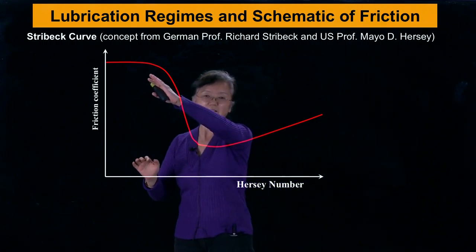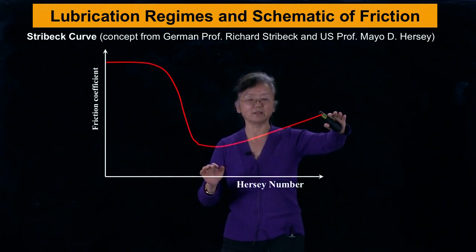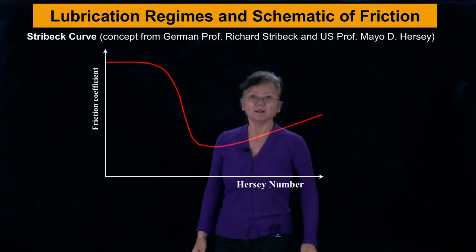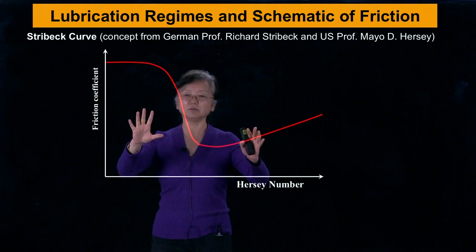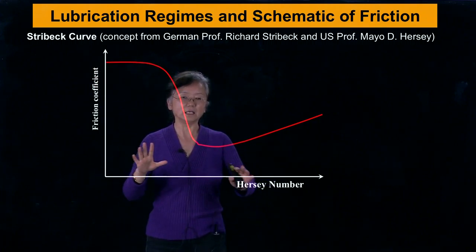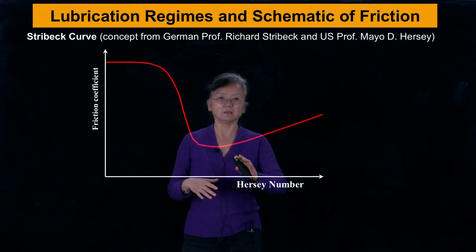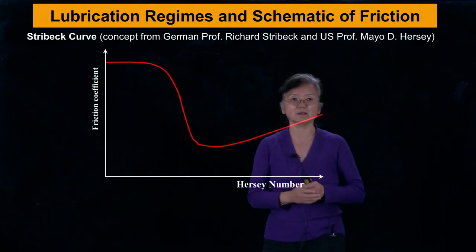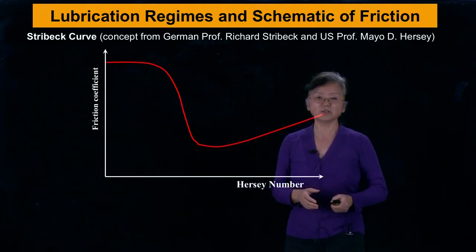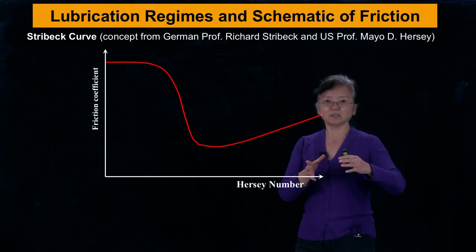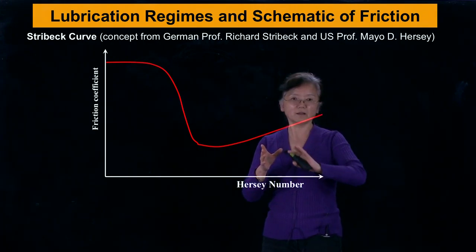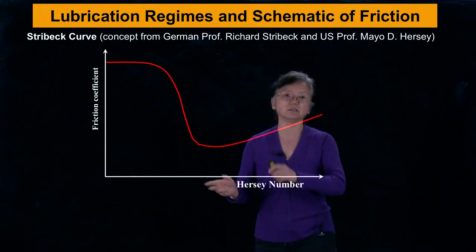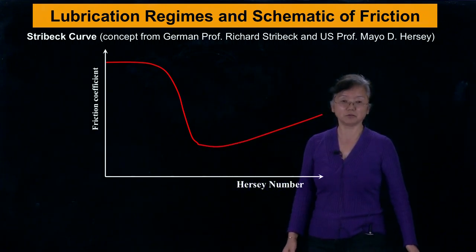I'll come to the Hersey number. This schematic of the friction variation shows that at the beginning it is almost flat, then there is a reduction, and then a little increase. The concept was due to Professor Stribeck, who did a lot of journal bearing experiments across a wide range of operating conditions such as load and speed. Later on, Professor Hersey in the U.S. found that we can plot this friction curve against the Hersey number, so the whole thing became conceptual and non-dimensional. It really demonstrated the variation of friction for journal bearings.